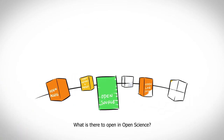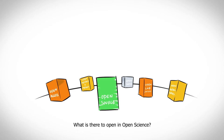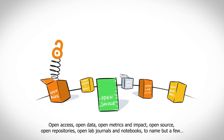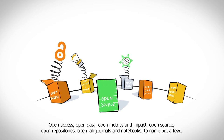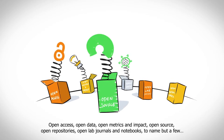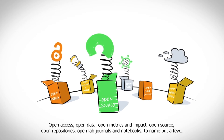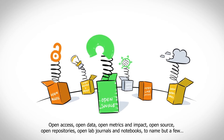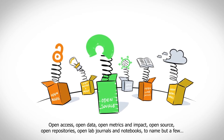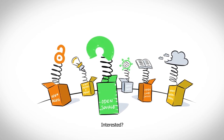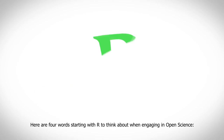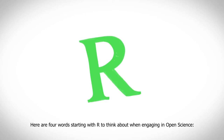What is there to open in open science? Open access, open data, open metrics and impact, open source, open repositories, open lab journals and notebooks — to name but a few. Here are four words starting with R to think about when engaging in open science.